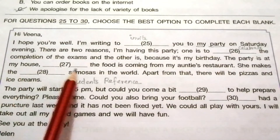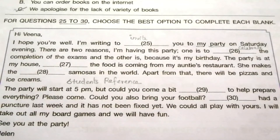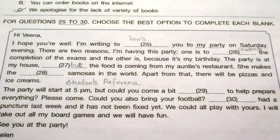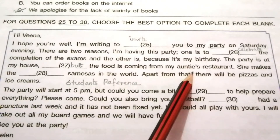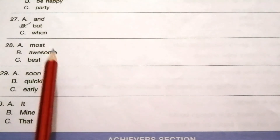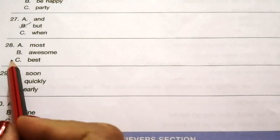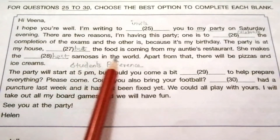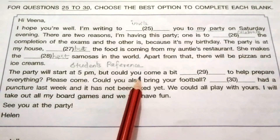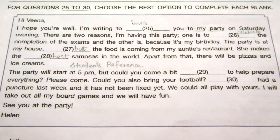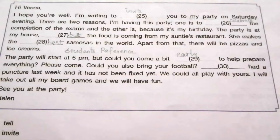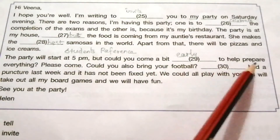'The party is at my house, ___ the food is coming from my auntie's restaurant.' Options: A) and, B) but, C) when. The answer is B — but. 'She makes the ___ samosas in the world.' Options: A) most awesome, B) good, C) best. The answer is C — best. 'The party will start at 5 p.m., but would you come a bit ___ to help prepare everything?' Options: A) soon, B) quickly, C) early. The answer is C — early.